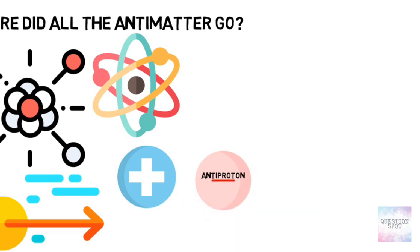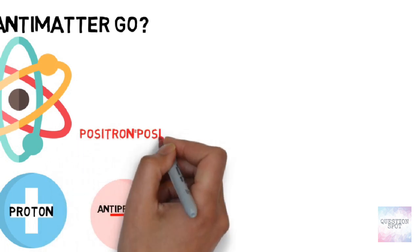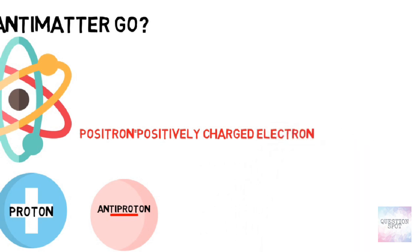an antiproton is just like a proton, but with a negative charge. The antiparticle corresponding to the negatively charged electron, meanwhile, is the positively charged positron.